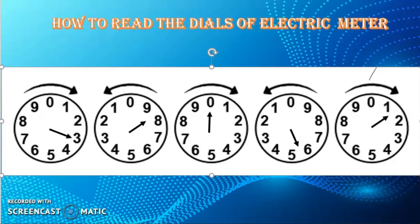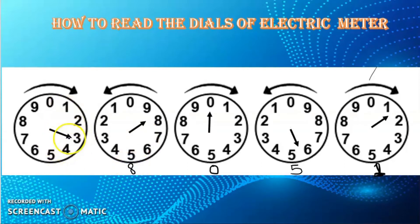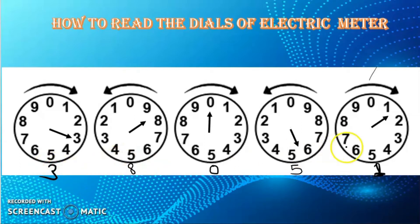Let's try to read another set of dials. We start from the right side. The first dial reads one or two — that's one. The next is between five and six — the lower is five. The next points directly to zero. Then between eight and nine — the lower is eight. The last points directly to three. So the reading is 38,051.